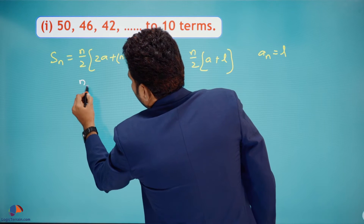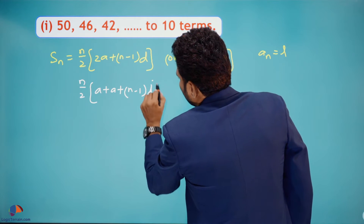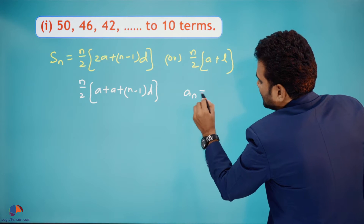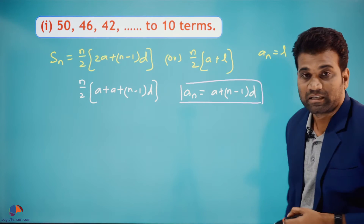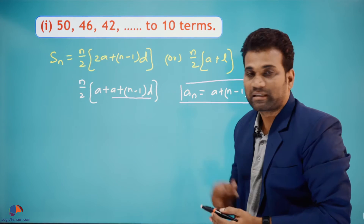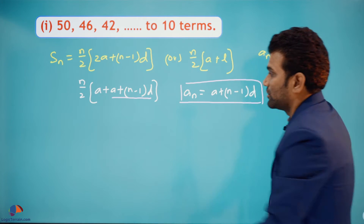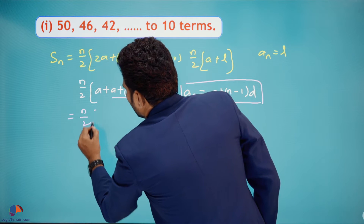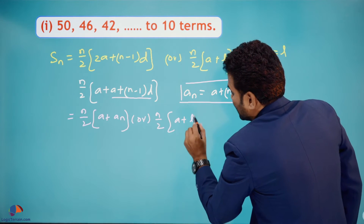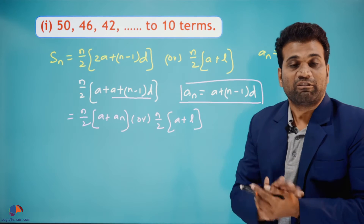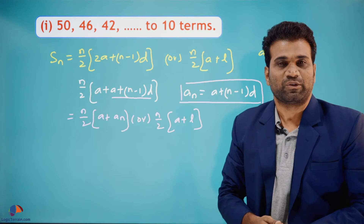To see how it's derived: n/2 × (2a + (n−1)d) can be rewritten as n/2 × (a + [a + (n−1)d]). Since the nth term formula is aₙ = a + (n−1)d, that bracketed part is just aₙ, which equals the last term l. So it becomes n/2 × (a + l). Since we don't have the last term here, we'll use the first formula.